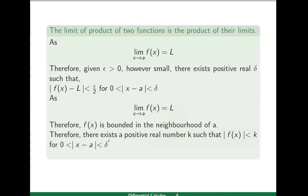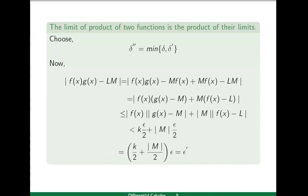From the previous lecture on differential calculus, we saw that whenever limit x approaches to a of f(x) is l, then f(x) is bounded in the deleted neighborhood of a. This means there exists a positive real number k such that |f(x)| less than k for zero less than |x−a| less than delta-dash. We now choose delta-double-dash as the minimum of delta and delta-dash, so that all three conditions involving delta-one, delta-two, and delta-dash can be used together.